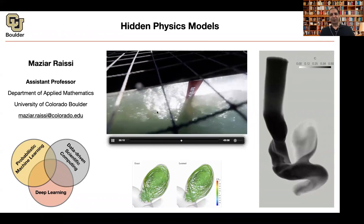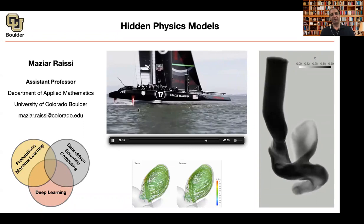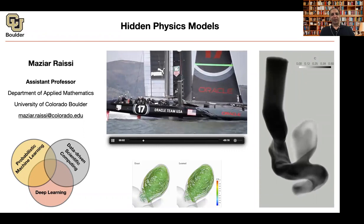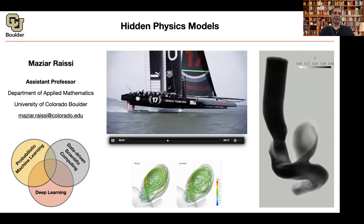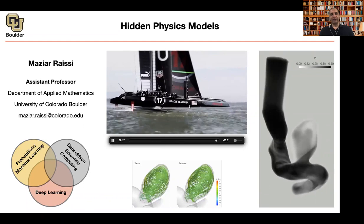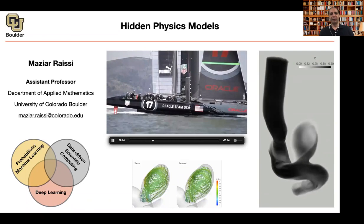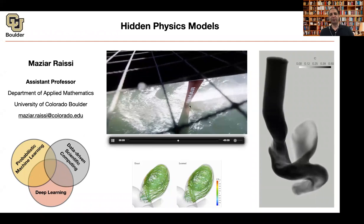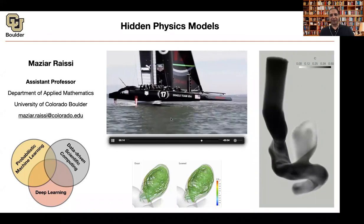Everything started with this project. It's a project supported by DARPA. The idea is to design super-cavitating hydrofoils in such a way that enables a marine vessel to go as fast as possible. Basically, it's going to break the water, create vapor around it, and then because of the lift forces, the vessel is going to lift itself up — flying in air rather than water because of the vapor around the super-cavitating hydrofoil.